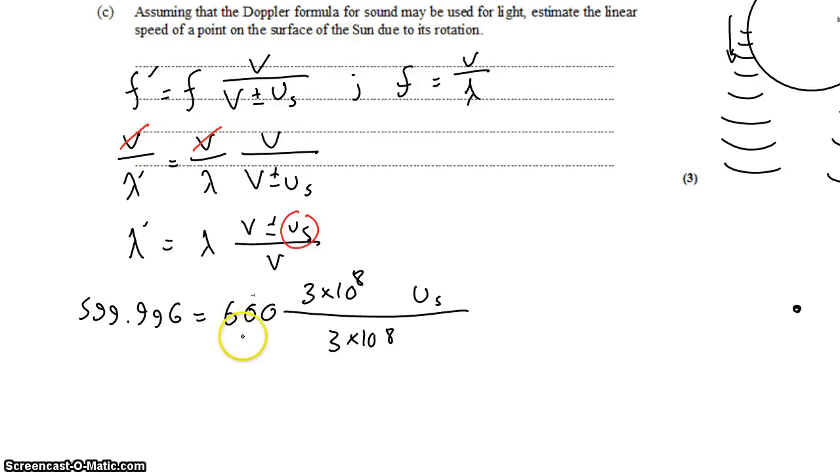We can see in the equation that the wavelength needs to become smaller. So we need to multiply 600 by a number less than 1. And since this is 3 times 10^8 divided by 3 times 10^8, to turn this fraction into a number less than 1, we need to subtract by the speed of the source, the speed of the Sun. This is something you can simplify in your calculator and solve, or just rearrange algebraically. And you find that the speed of the Sun is 2,000 meters per second.